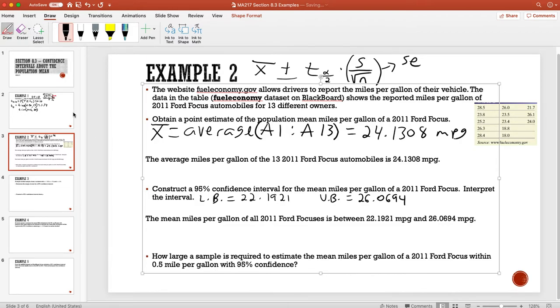For this last part, we want how large a sample is required to estimate the mean miles per gallon of a 2011 Ford Focus within 0.5 miles per gallon with 95% confidence.